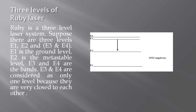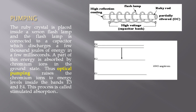The term metastable level has been discussed in one of my previous videos. For pumping, the ruby crystal is placed inside a xenon flash lamp, and the flash lamp is connected to a capacitor which discharges a few thousand joules of energy in a few milliseconds. Pumping means to excite the electrons or ions from the lower level to the upper level.